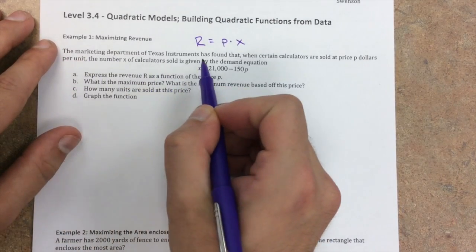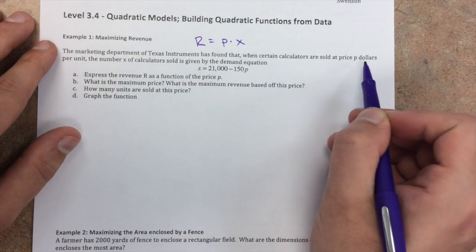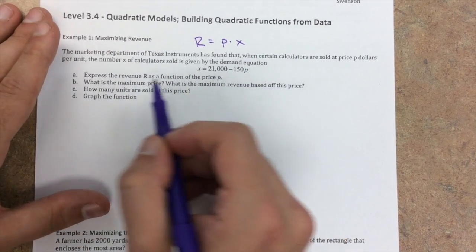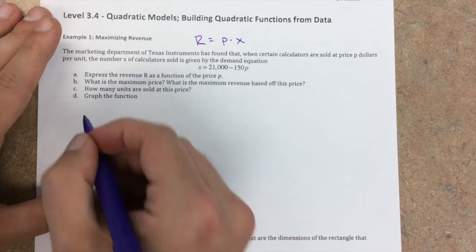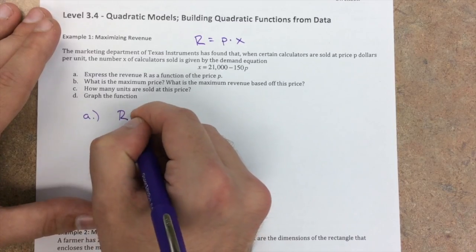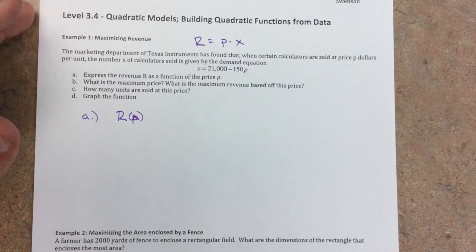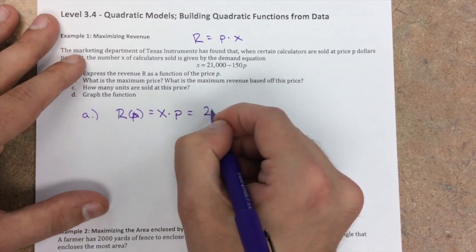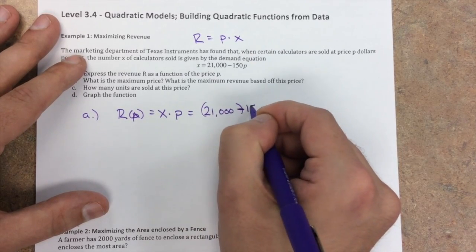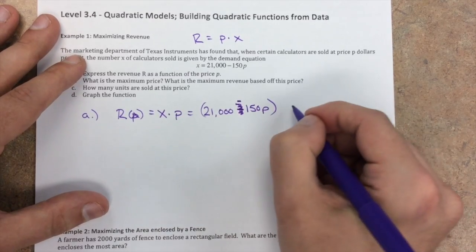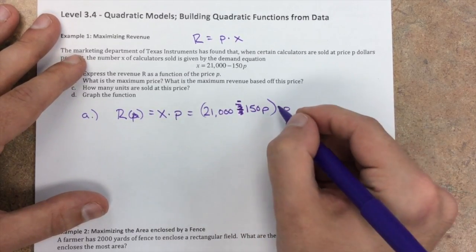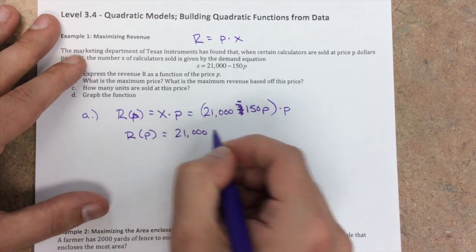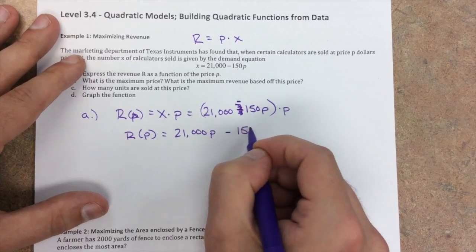The marketing department for Texas Instruments has found that when certain calculators are sold at price P per unit, the number X of calculators sold is given by the demand equation here. Express R as a function of the price P. So as we said for A, the revenue in terms of P is just the demand times the price. So we have 21,000 minus 150P times P. If I just distribute that, I get R(P) equals 21,000P minus 150P squared.